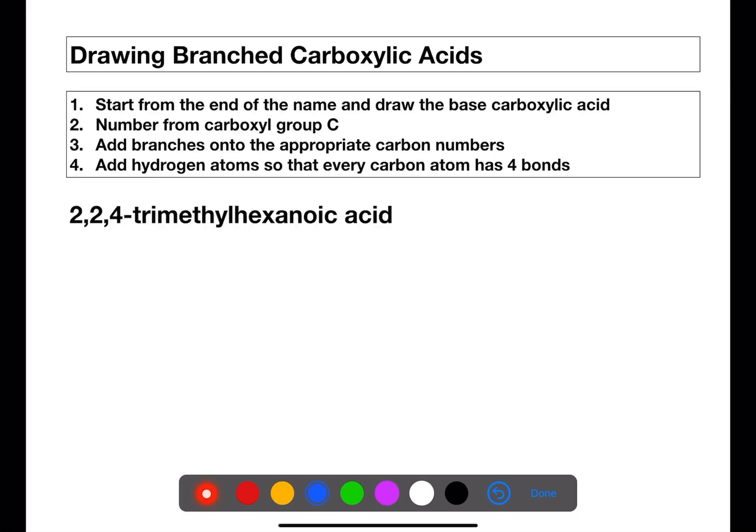Let's look at this example. The base of the name is hexanoic acid. We have methyl branches and they are on numbers 2, 2 and 4. If we start with six carbons for the hexanoic acid and on carbon number one we have the carboxylic acid group.